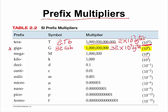Mega means 10 to the power of 6. Kilo is very common — you have kilograms, kilometers, and so on. Kilo means 10 to the power of 3, or one with 3 zeros behind it, which is 1000. So if the weight of a child is 15 kilograms, that is another way of saying the weight of the child is 15 times 10 to the power of 3 grams.